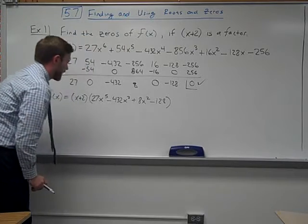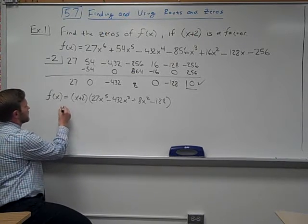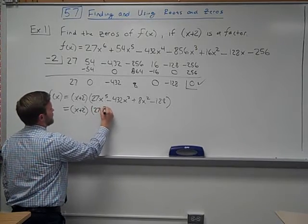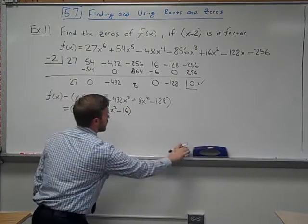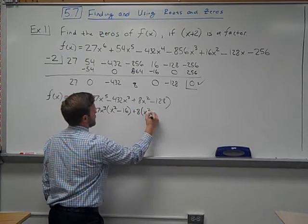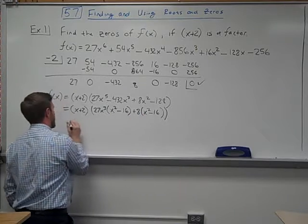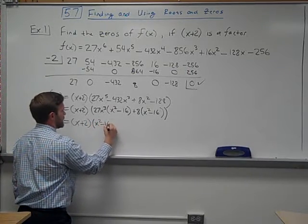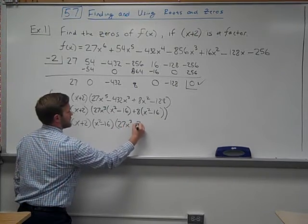When we do this by grouping, the first two terms have 27x³ in common, so pulling that out gives 27x³(x² − 16). For grouping to work, the second binomial should also be (x² − 16), and if we factor out an 8 from the last two terms, we get 8(x² − 16). So we pull out (x² − 16), leaving us with: (x + 2)(x² − 16)(27x³ + 8).